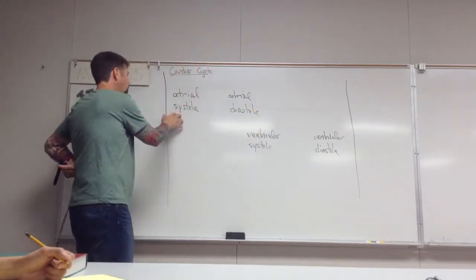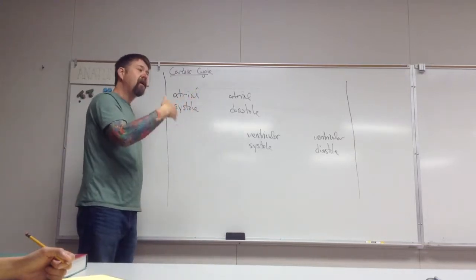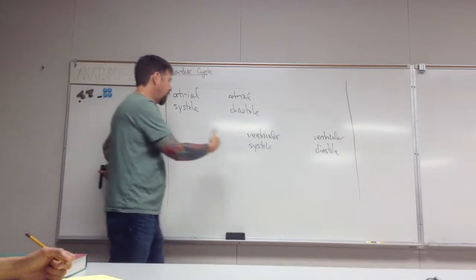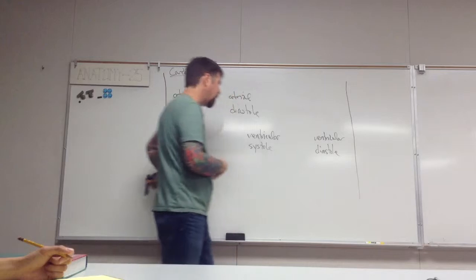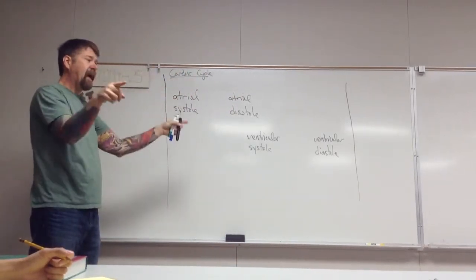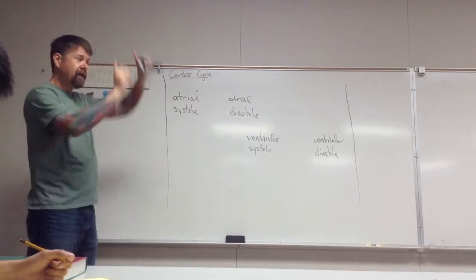So when we say atrial systole, we're really talking about both of the atria contracting. Atrial diastole, both of the atria relaxing. Ventricular systole, both of the ventricles contracting. Ventricular diastole, both relaxing. So blood is pulsing out of the arteries, the great arteries, the pulmonary trunk and the aorta simultaneously.